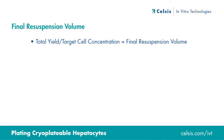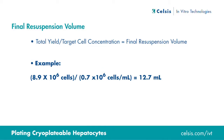To determine this final volume, the total viable cell number of 8.9 times 10 to the 6 cells is divided by our desired target cell concentration of 0.7 times 10 to the 6 viable cells per milliliter. This yields 12.7 milliliters as the final resuspension volume.